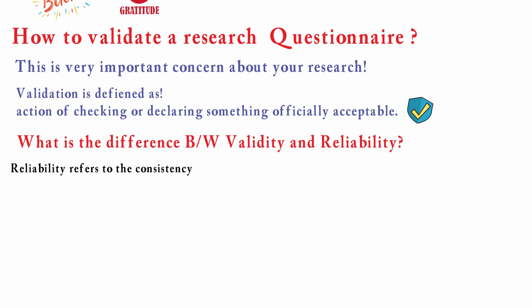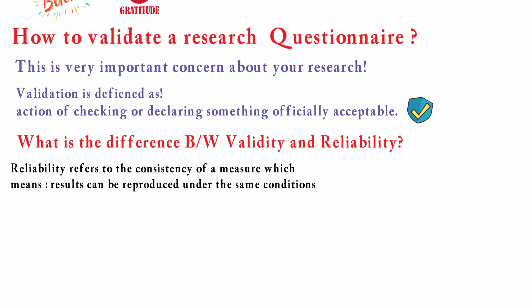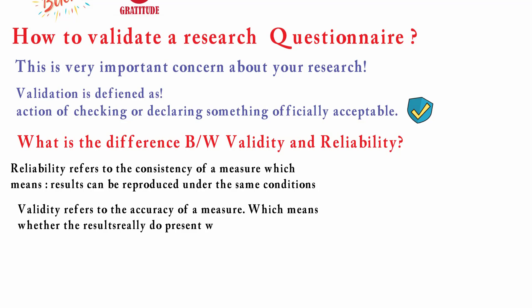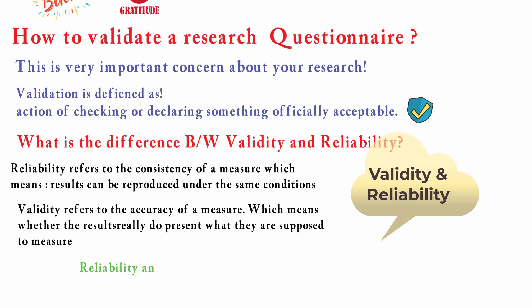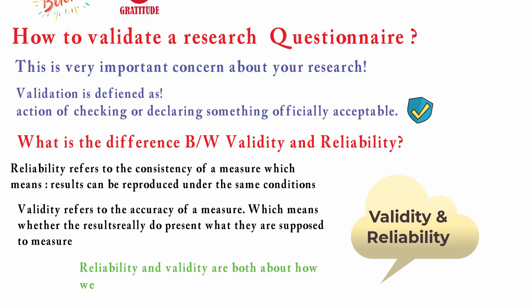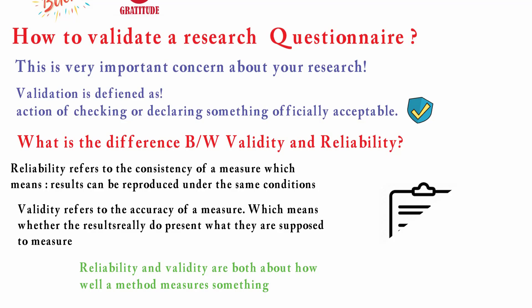What is the difference between validity and reliability? Reliability refers to the consistency of the measures, which means that the result can be reproduced under the same condition, while validity refers to the accuracy of the measure — whether the results really do present what they're supposed to measure. In this video I will explain both reliability and validity, starting with validity first.